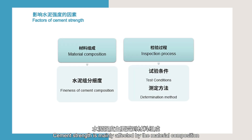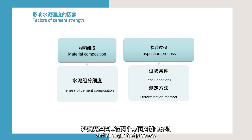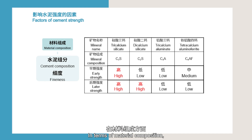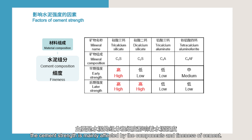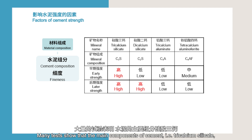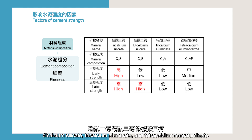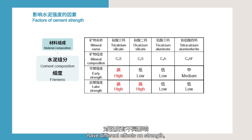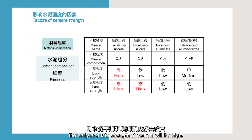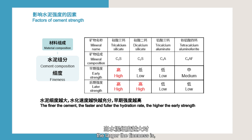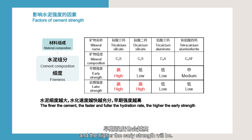Cement strength is mainly affected by material composition and the strength test process. In terms of material composition, cement strength is mainly affected by the components and fineness of cement. Many tests show that the main components of cement – tricalcium silicate, dicalcium silicate, tricalcium aluminate, and tetracalcium ferroaluminate – have different effects on strength, as shown in the following figure. For example, if the content of tricalcium silicate is high, the early and late strength of cement will be high. On the other hand, the larger the fineness is, the faster and more sufficient the hydration speed is, and the higher the early strength will be.